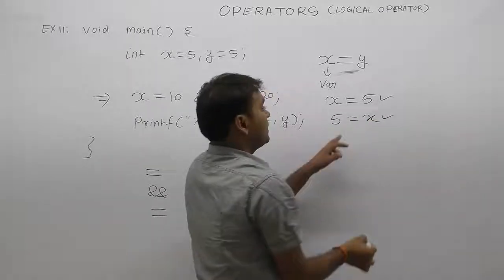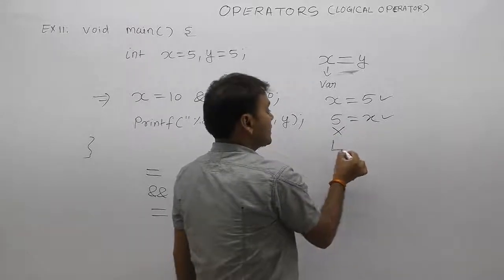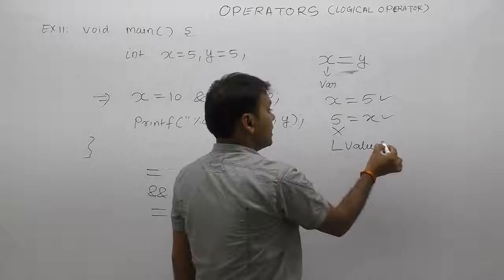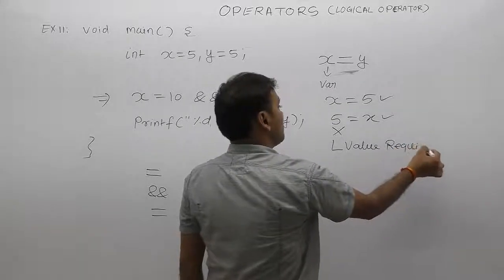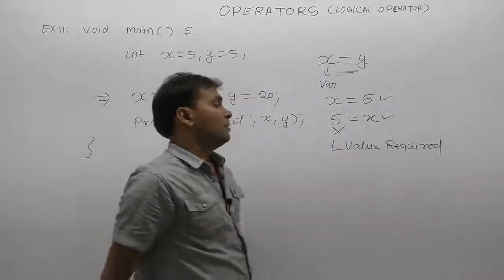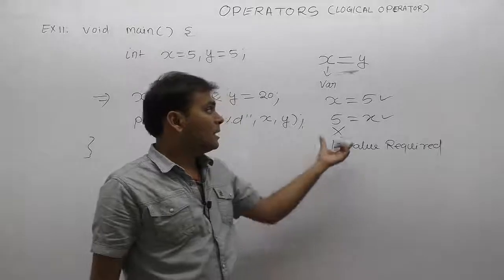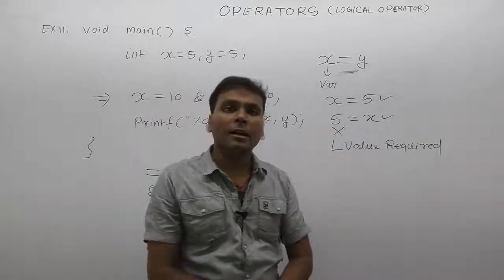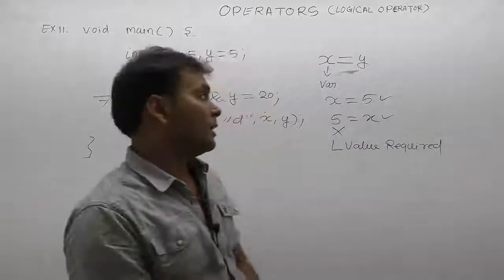For assignment, the left operand must be a value — but that is not allowed. Therefore, in that case, a compile time error will be raised: 'L value required,' or we can say 'left value required.' This is a compile time error because the mandatory condition for the assignment operator is strictly that the left operand must be a variable, not a value.